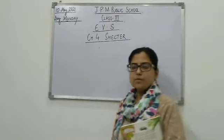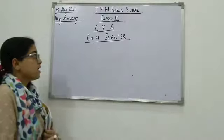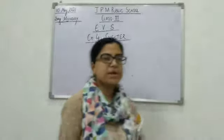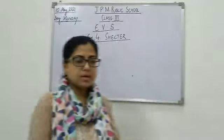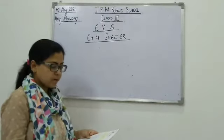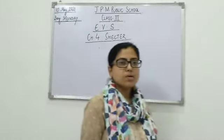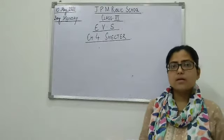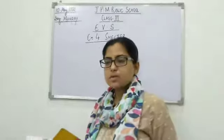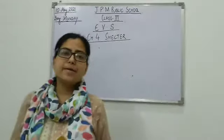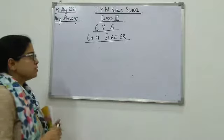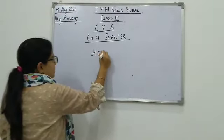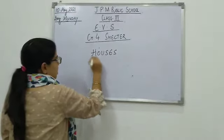A very good morning to all of you. This is our English class and we are doing chapter 4, Shelter. In the previous class, we had already done half of this chapter in which we studied about what is a shelter and how many types of shelter are there. Temporary houses or permanent houses — which are the manmade houses.